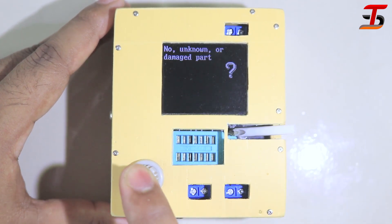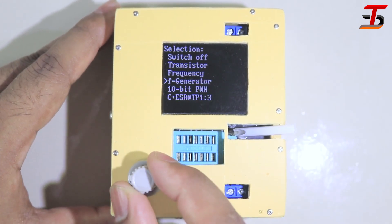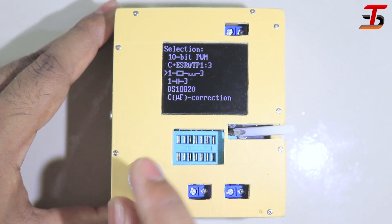After long press, you can see some option. I want to measure a resistor, that's why I select this option.